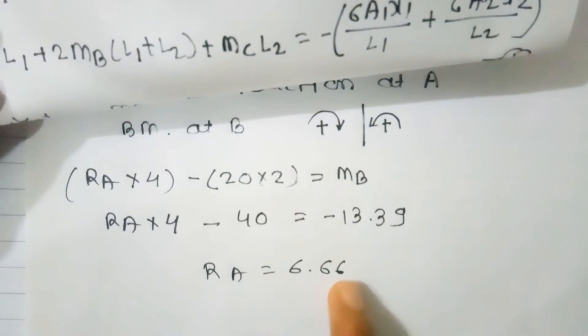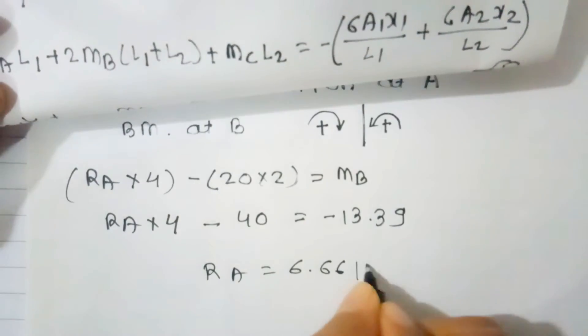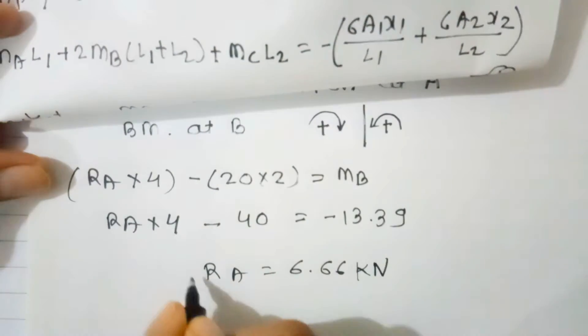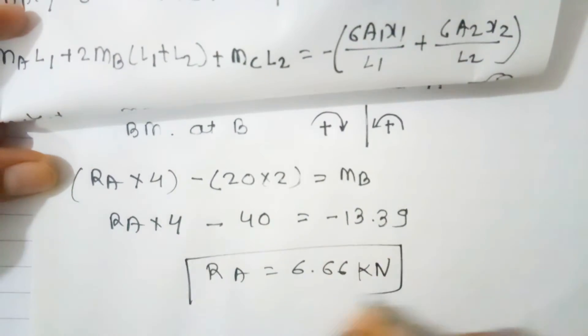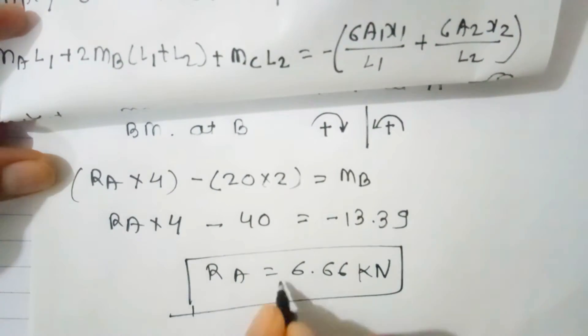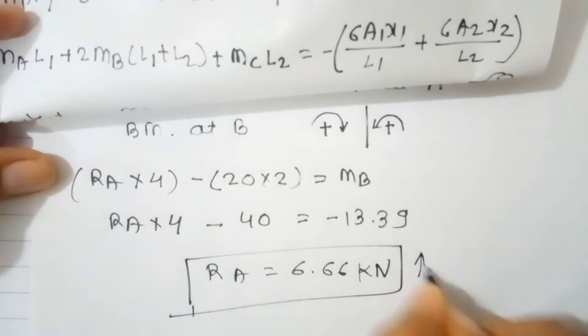RA = 6.66 kN. The positive sign indicates it acts upward.